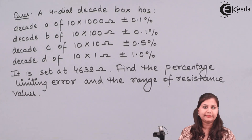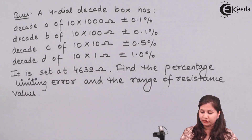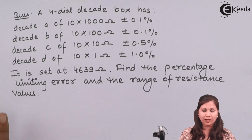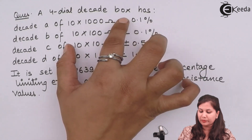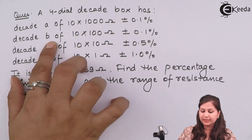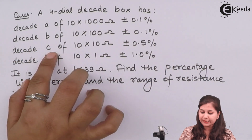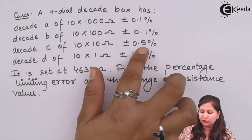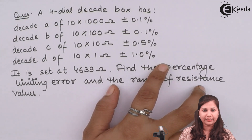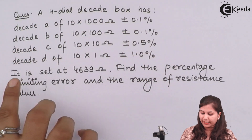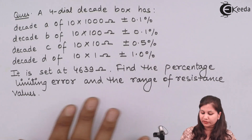Our problem is: we are given a four-dial decade box with four dials — decade A, decade B, decade C, and decade D. This dial box can measure resistances in the range of 1000. Decade A denotes 10×1000 ohm resistance with error ±0.1%. Decade B measures 10×100 ohm resistance with error ±0.1%. Decade D measures 10×1 ohm resistance with error ±1%. The box is set at 4639 ohms. We have to find the percentage limiting error and the range of resistance values.